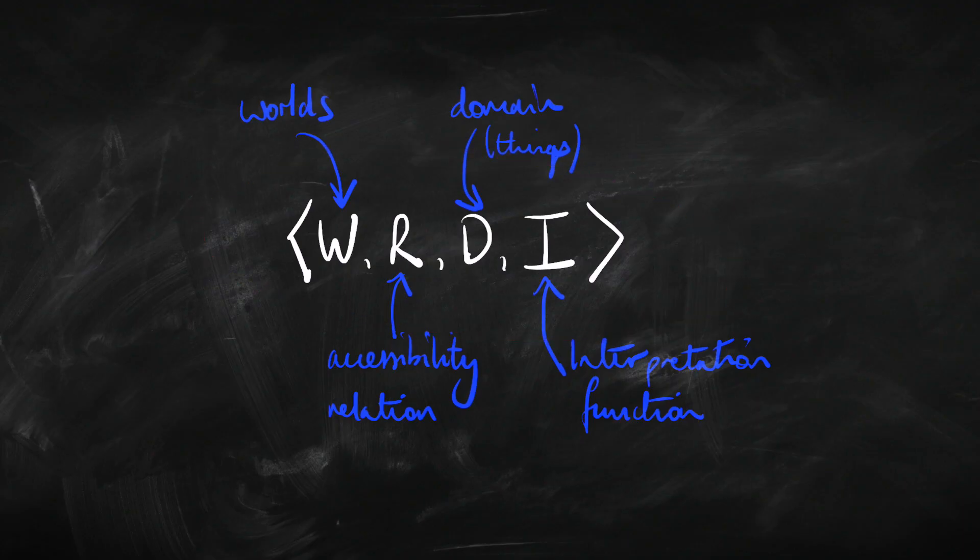Well, in a constant domain model we had four things: the worlds, the accessibility relation, one domain for all the worlds, and an interpretation function. What we're going to need here is a different domain for each possible world. However, because there can be as many possible worlds as you like, we don't want to write down a different domain for each one. So, we're going to have a domain function that will dole out to each possible world a domain of its own. We're going to have two things in the official definition of a model: one overall domain — all of the things we're talking about throughout the model — and a domain function that dishes out a specific local domain for each possible world.